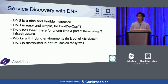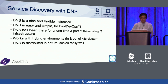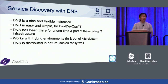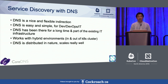DNS has been there for a long time, so it's really part of the existing IT infrastructure. This really helps in a hybrid environment where you have services deployed both inside and outside of a Kubernetes cluster. Finally, DNS is distributed in nature. It may not be the most sophisticated distributed system, but it scales very well.